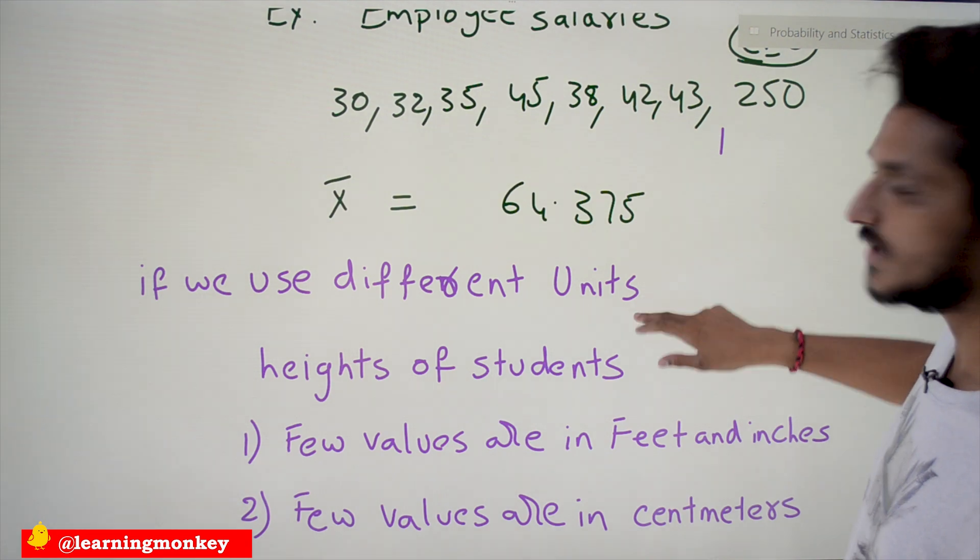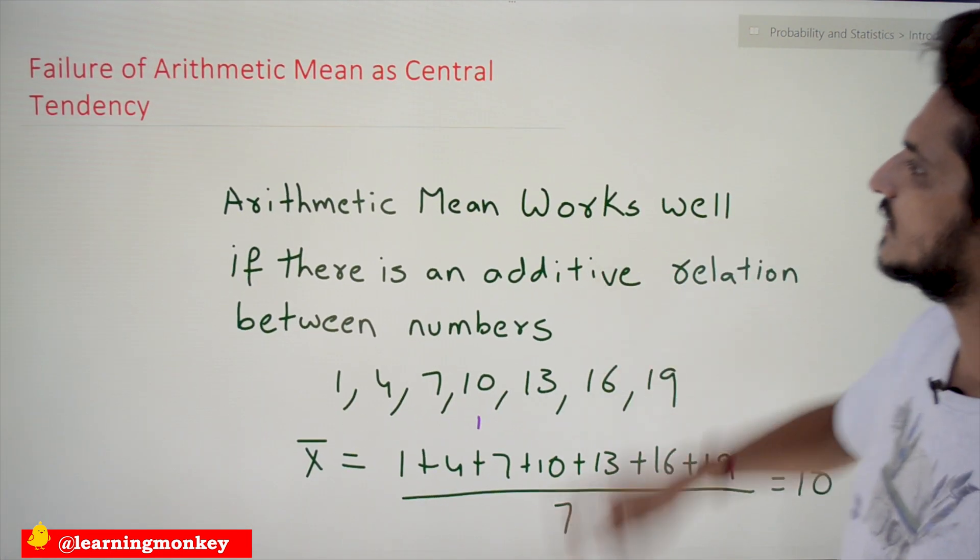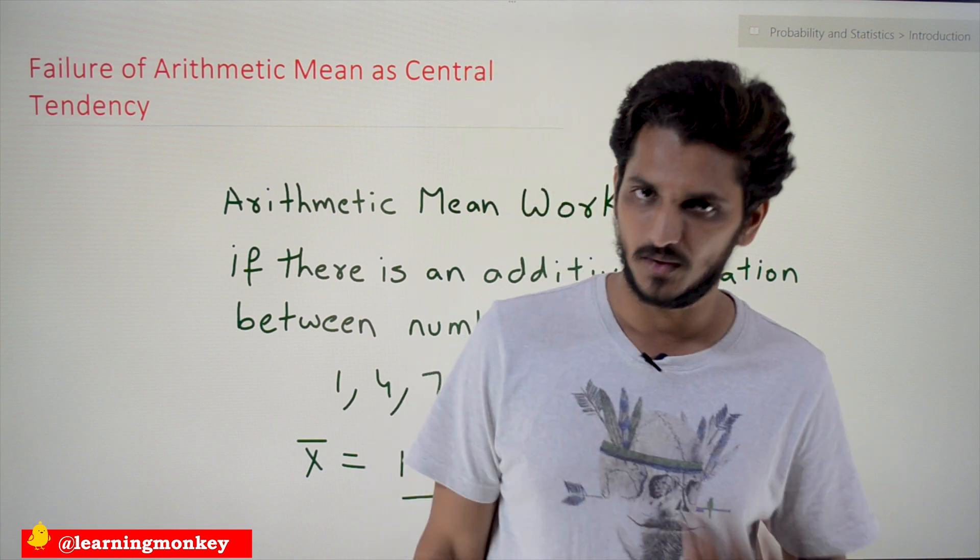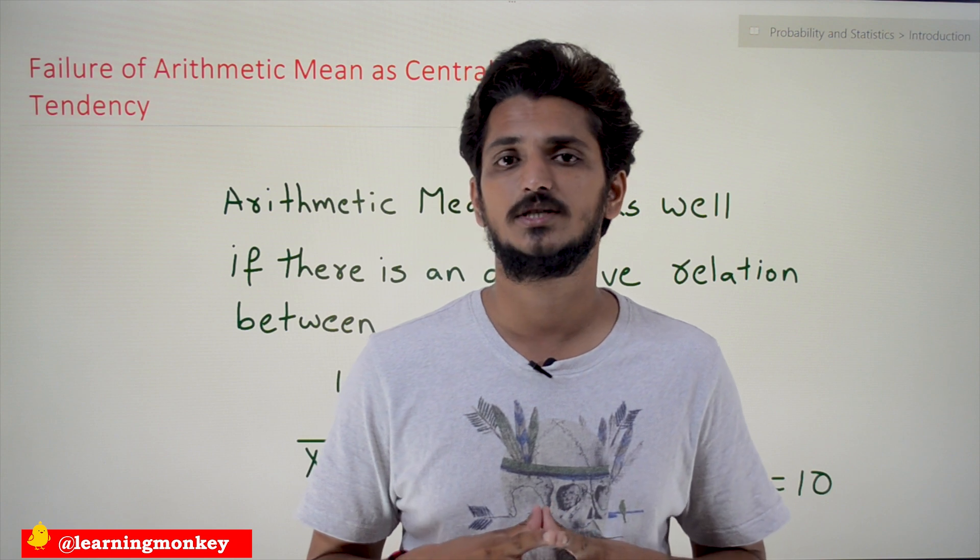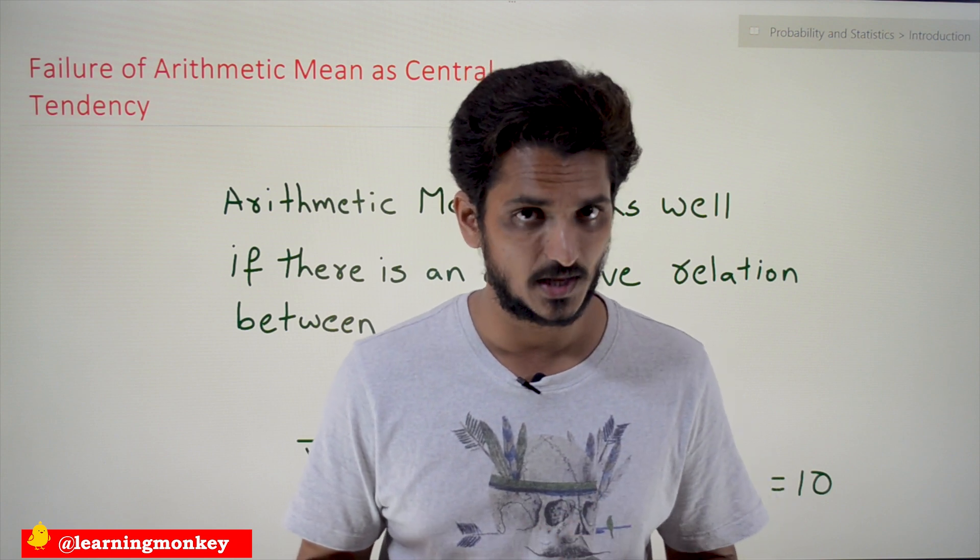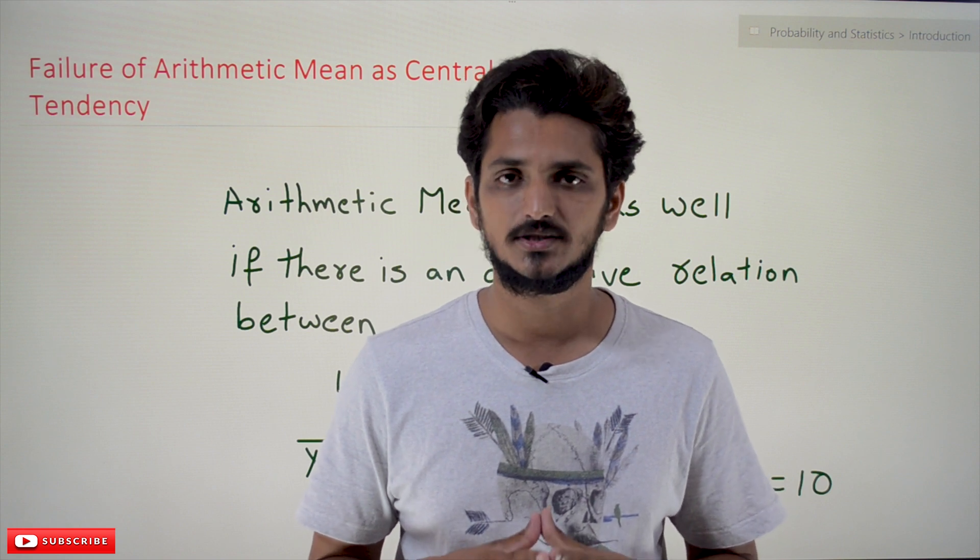Hope you understand. These are the failure situations where you are not supposed to apply the central tendency as an arithmetic mean. Hope you understand the concept. If you have any questions regarding the concept, please post your questions in the comment section below. Thanks for watching. If you haven't subscribed to our channel, please subscribe to our channel and press the bell icon for the latest updates. Thank you.